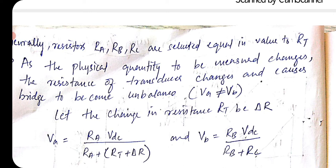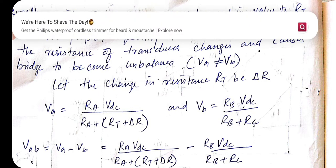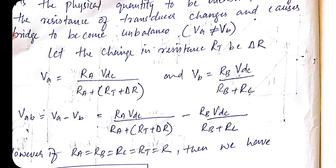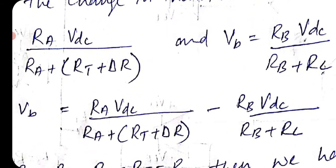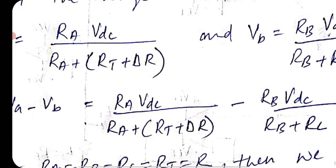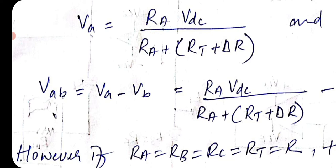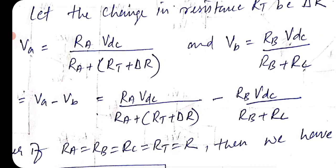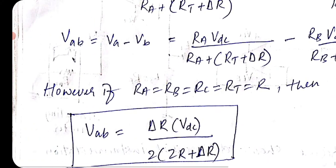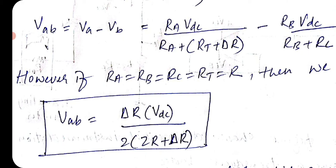Let the change in resistance RT be delta R. VA can be rewritten as: VA = RA × VDC / (RA + RT + delta R), whereas VB remains unchanged — only VA has changed. VAB is obtained as VA minus VB. If RA = RB = RC = RT = R, then VAB = (delta R × VDC) / (2 × (2R + delta R)).